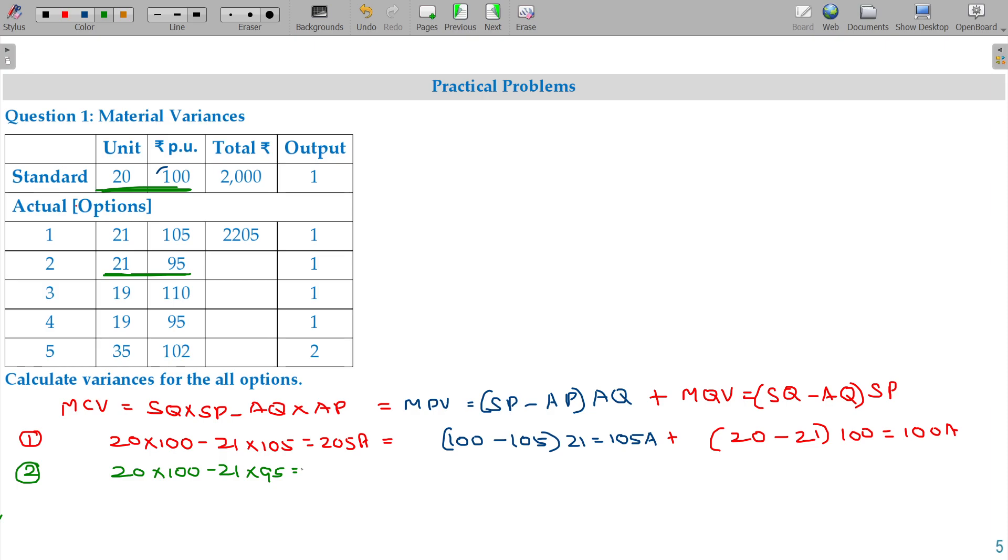Actual, 21 actual quantity, price 95. So 21 into 95, 1,995. 2,000 minus this one, 5 favorable. So if the scenario favorable here, price or quantity. Price is here, of course, 5 rupees saved. So the actual number of units being 21, so 21 into 5, 105, will be favorable on the next one.